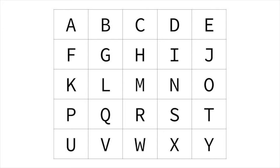Unlike normal word-finding grid puzzles, you can go different directions in the same word. For example, in this grid, you can form the word 'minty' by connecting letters like this. Usually words must be three letters long and can't use the same tile twice.